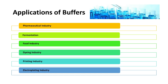When we talk about the different applications of buffers, we find their utility in different sectors and areas of industry. For example, they are of much use in the pharmaceutical industry. Apart from pharmaceutical industries, buffers find wide applicability in the fermentation industries, food industries, dyeing industries, printing industries, and electroplating industries.